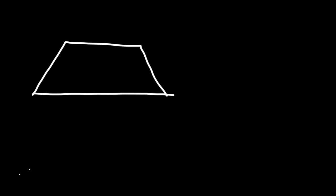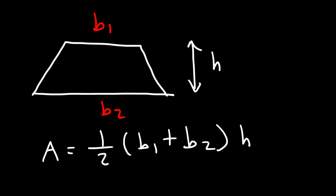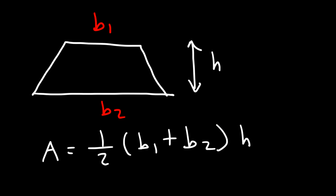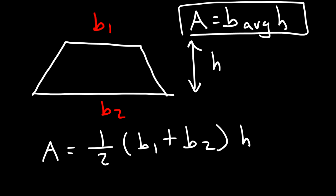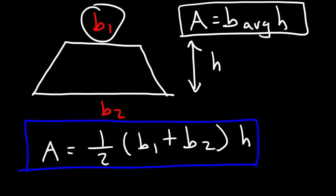The next shape is the isosceles trapezoid. It has base one, base two, and a height. The area is one half times the sum of base one plus base two, times the height. You can think of it as the average of the two bases multiplied by the height — so make sure you know: area equals one half (B1 plus B2) times H.